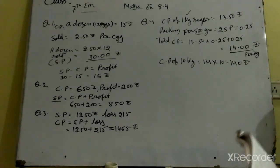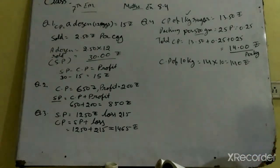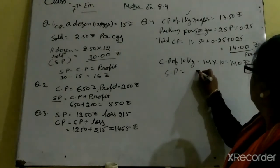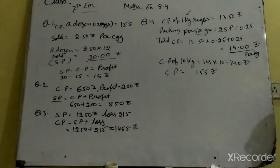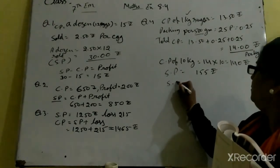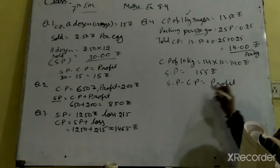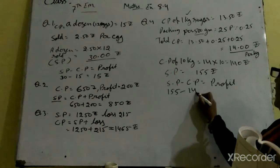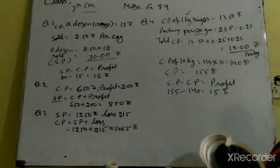10 kg kharidi, uski CP 140 rupees. SP bol raha hai — ussne bechi 155 rupees mein. Yani SP = 155 rupees. Profit = SP minus CP = 155 minus 140 = 15 rupees ka profit ho gaya.